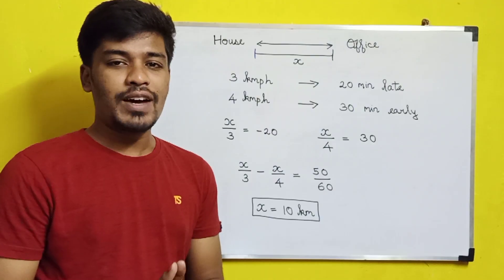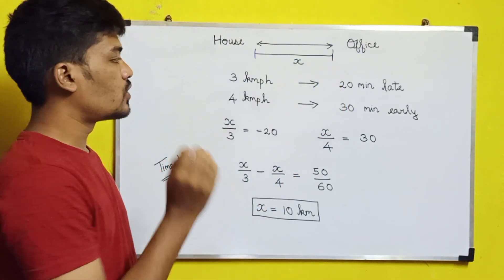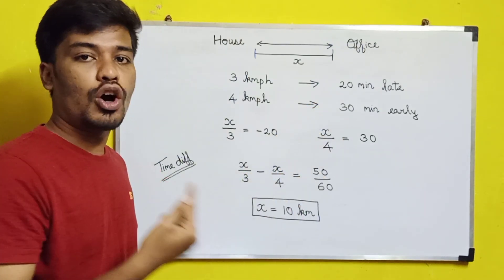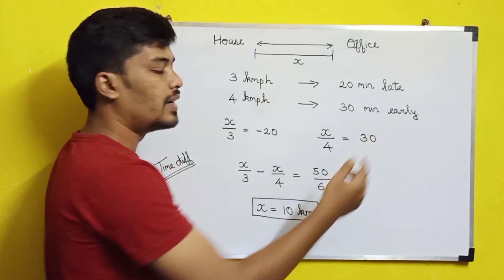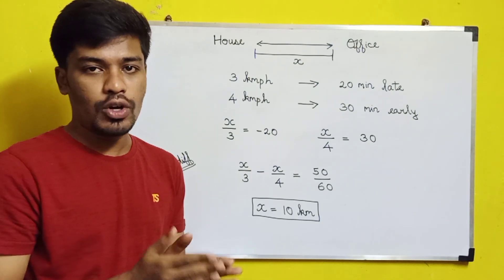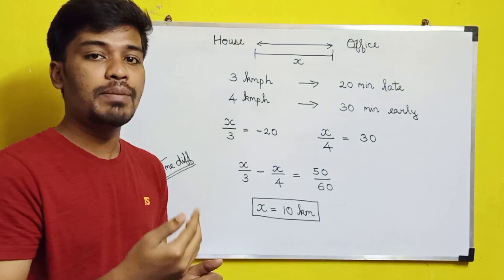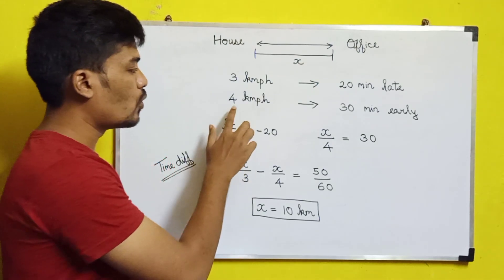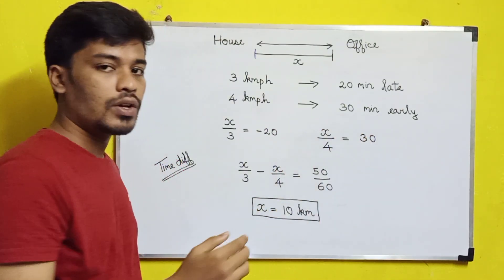So this is how our logic is applied. If you travel at 3 km per hour you will be 20 minutes late to the office. If you travel at 4 km per hour, you will arrive 30 minutes early. So if your office time is 10:00, at 3 km/hr you arrive at 10:20, and at 4 km/hr you arrive at 9:30.